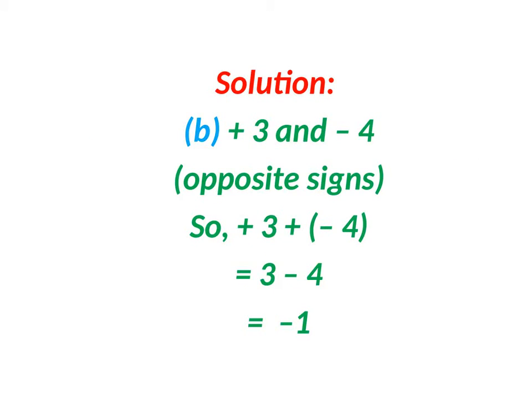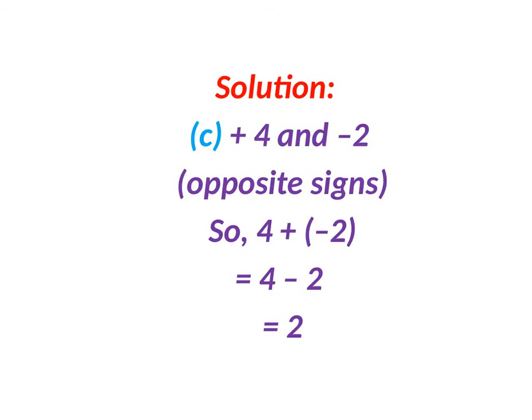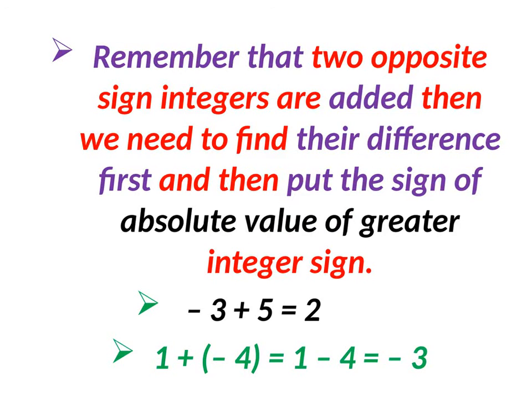Next, plus 3 and minus 4. Opposite signs are there, so find the difference. The difference is 1, and 4 is greater, so the answer is minus 1. For 4 and minus 2, opposite signs are there. The difference is 2, and 4 is greater, so 4 plus minus 2 equals plus 2. Remember how we add two different signs.